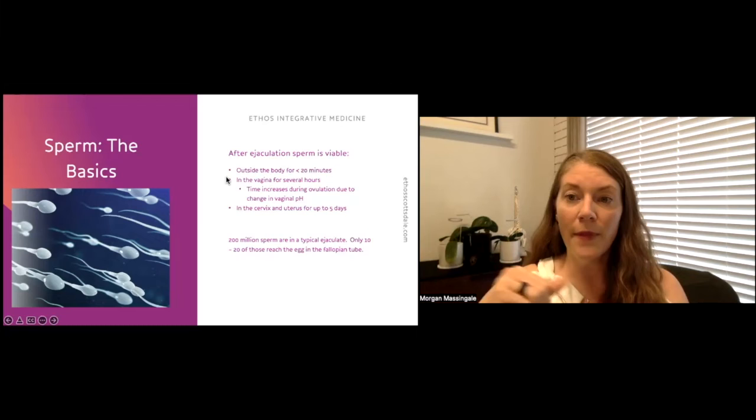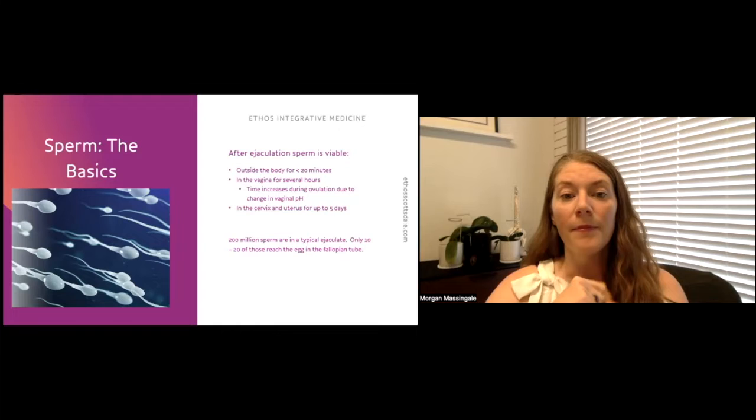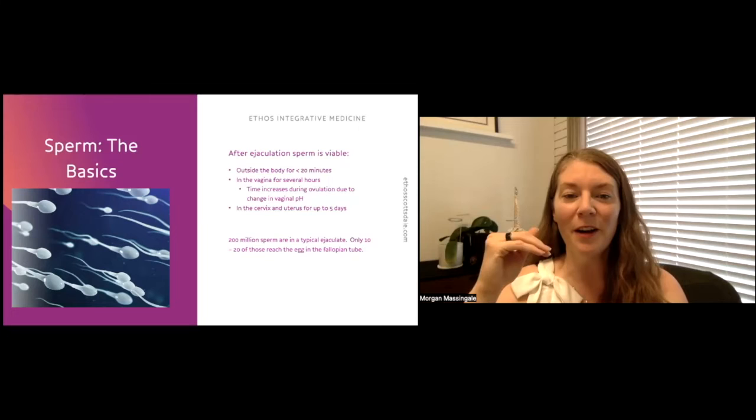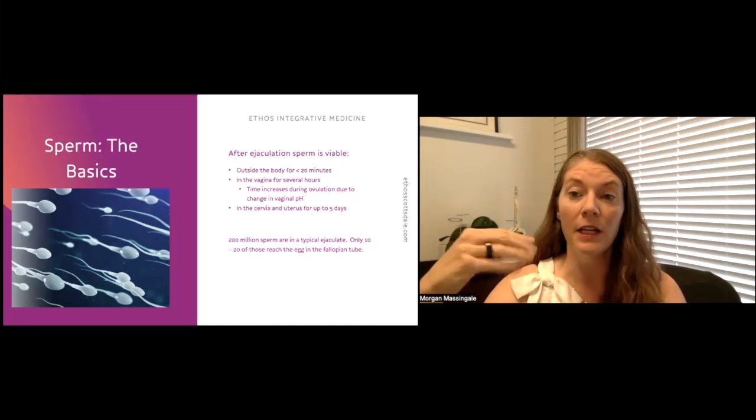From there, ejaculated sperm in the vagina are viable for several hours. This time is actually increased during ovulation because the body's fairly smart and it raises the pH of the vagina. The vagina on a typical, non-ovulating day is actually fairly acidic, which is why the spermies die more quickly.